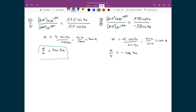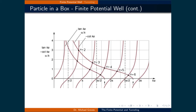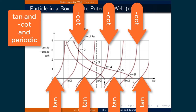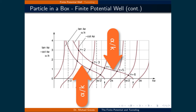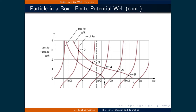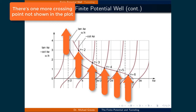So we have arrived at the two relationships: α/k = tan(ka) and α/k = −cot(ka). There are no analytical solutions to these equations, so one way to find the energies of the bound states is to plot them. The solutions occur when the α/k line intersects the tan(ka) or negative cot(ka) curves in the plot.